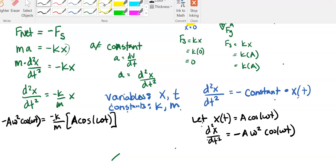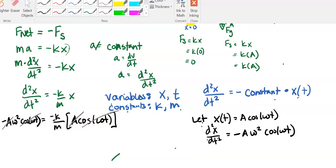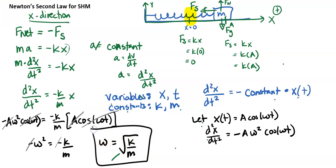Now let's simplify. We've got A on both sides — that cancels. We've got cos(ωt) on both sides — that cancels. So we're left with negative ω² = negative k/m. Canceling the negatives gives ω² = k/m, so omega equals the square root of k over m. We just proved the relationship between the angular frequency ω and k and m for an object oscillating in simple harmonic motion.